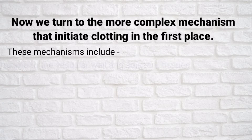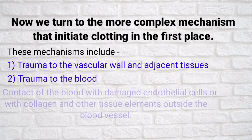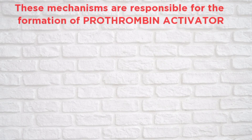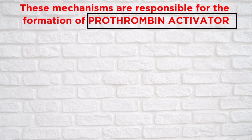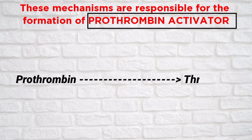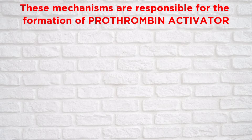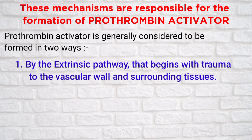These mechanisms include trauma to the vascular wall and adjacent tissue, trauma to the blood, or contact of the blood with damaged endothelial cells or with collagen and other tissue elements outside the blood vessel. These mechanisms are responsible for the formation of prothrombin activator, which causes the conversion of prothrombin to thrombin and all other subsequent clotting steps.